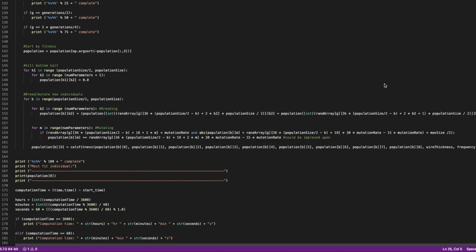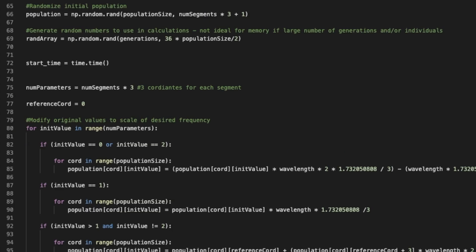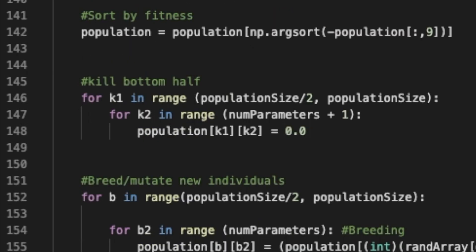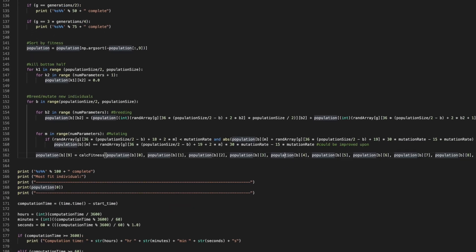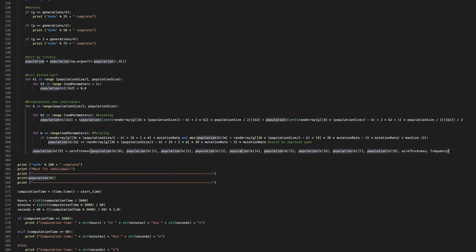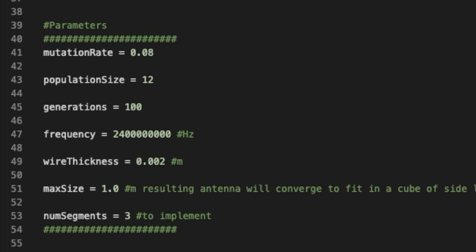The program does everything that I described earlier. It creates an initial population of random antennas, sorts by fitness, kills the bottom half, and then breeds the antennas. All with mutation, of course. I made it so you can specify the wire thickness, frequency, the number of generations, and population size prior to runtime.